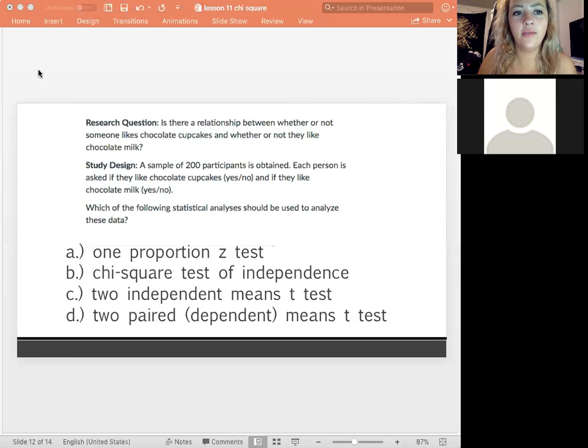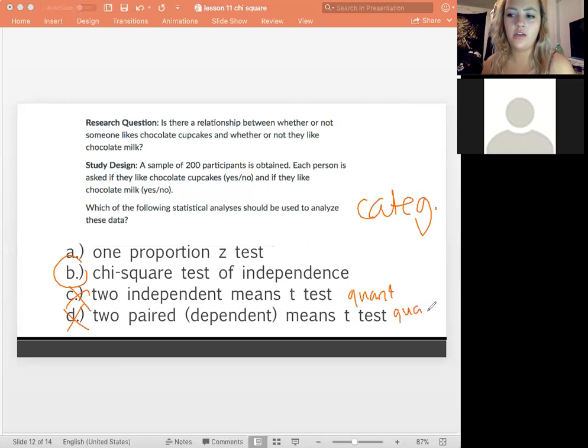All right, so our answer here is B, and the reason why our answer is B is because we are talking about categorical variables. So remember, in that case, that means we can X out C and D here because these would be talking about quantitative variables, which we're not talking about. We're talking about yes or no, which is a categorical variable there. So it's one of the first two, and so then chi-square test is going to be important just because the point is that we're talking about more than one group here, so we wouldn't want to use a one-proportion Z test because this is only one group, but we are talking about more than one group. So in this case, you would want to use a chi-square test of independence.